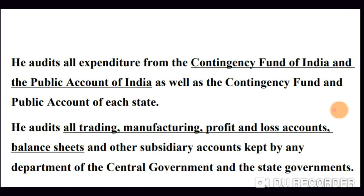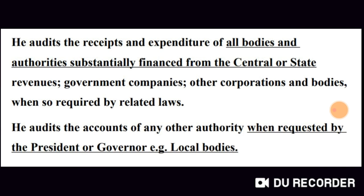He audits the contingency fund and the public account of each state. He also audits all trading, manufacturing, profit and loss accounts, balance sheets, and other subsidiary accounts kept by any department of the central government and the state government. Additionally, he audits the receipts and expenditure of all bodies and authorities substantially financed from central or state revenues, government companies, and other corporations and bodies when required by related laws.